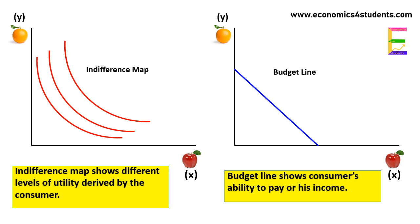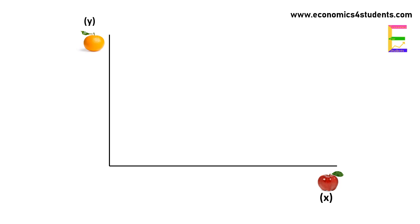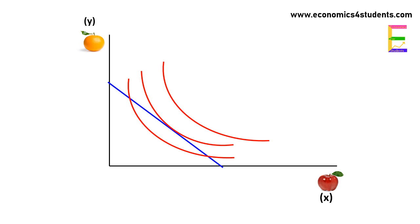The consumer's optimal choice is depicted by a particular combination of goods that will maximize the consumer's utility given a certain income. In order to find the optimal choice of a consumer, we have to combine indifference curves with his budget line. In this diagram, IC1, IC2, and IC3 are the indifference curves showing different levels of utility, and AB is the budget line representing a given level of income.